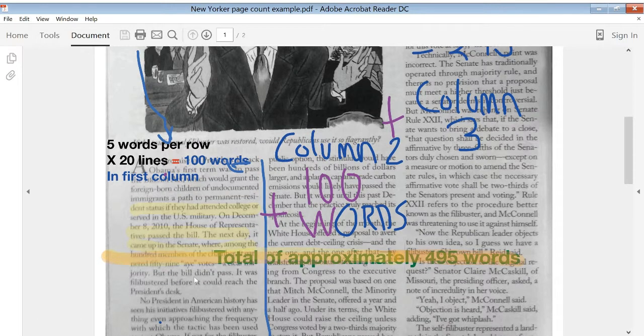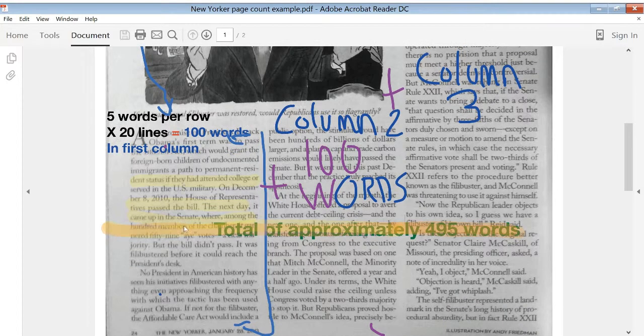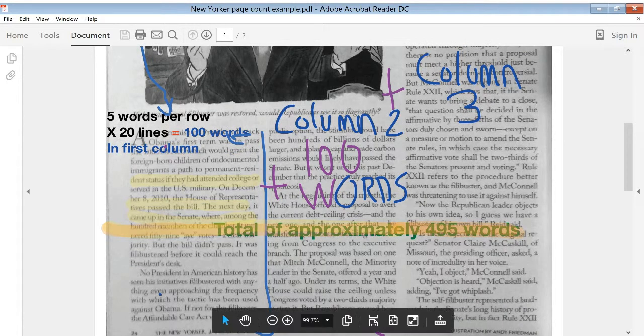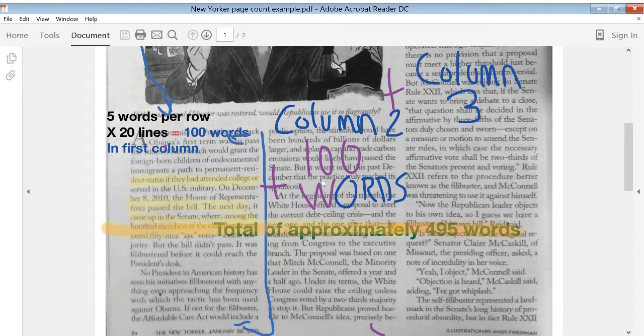So roughly five words per row times 20 lines in this first column. There's 20 lines in this first column equals 100 words in the first column. Column two, then, has the same number of rows, 20, so five approximately, since it's the same width of column, approximately five words per row equals 100 words.